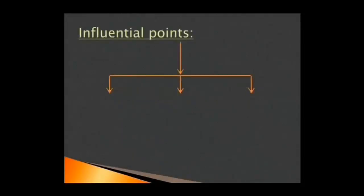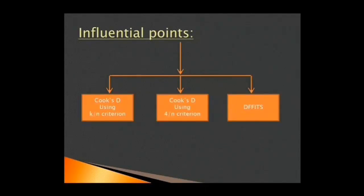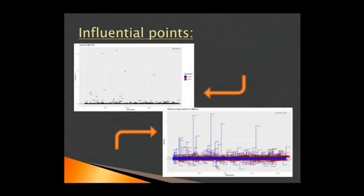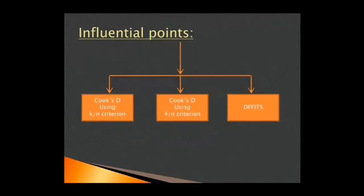To detect influential points, we use three methods: Cook's D k by n criteria, Cook's D using 4 by n criteria, and DFFits, that is difference in fits. We apply all three algorithms simultaneously and obtain the result in the form of graphs for better interpretation. These plots help us to discover the number of influential points present in the data. On that account, Cook's D for k by n criteria yield 1,264 influential points, 171 influential points using Cook's D 4 by n criteria, and using DFFits, we get 1,353 influential points.